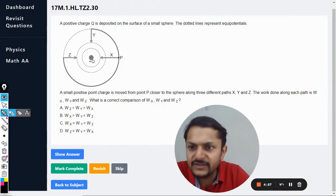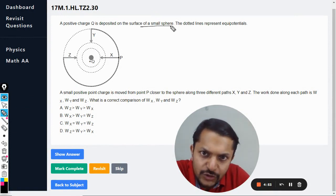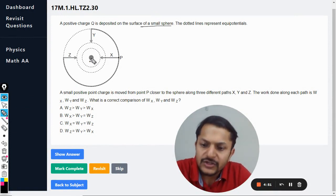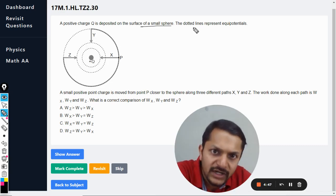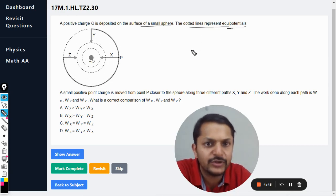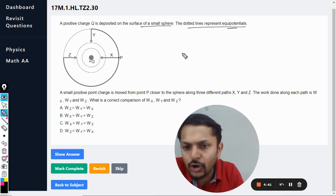Okay dear students, let's see what is in this question. A positive charge Q is deposited on the surface of a small sphere. This is the sphere they're talking about and the charge is given to this. The dotted lines represent the equipotential surfaces. Okay, so the potential is constant along all those lines.